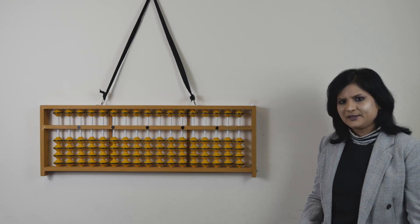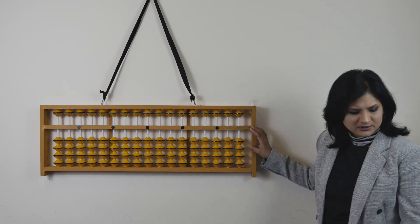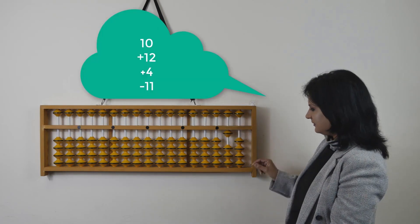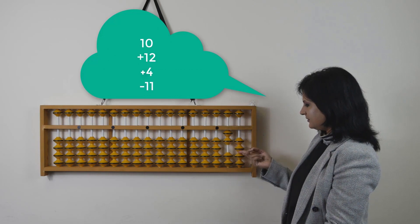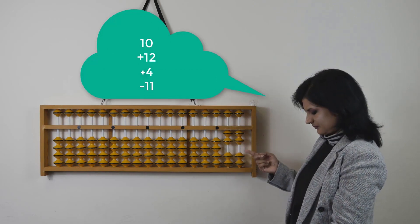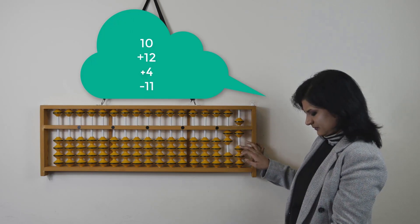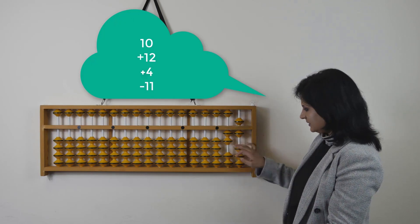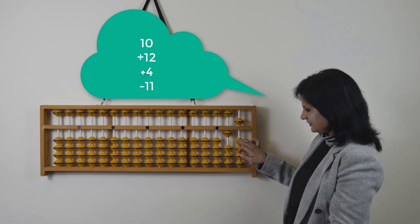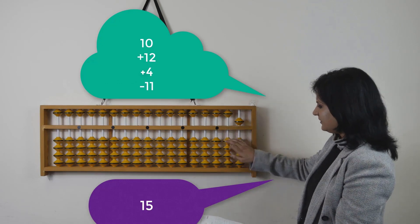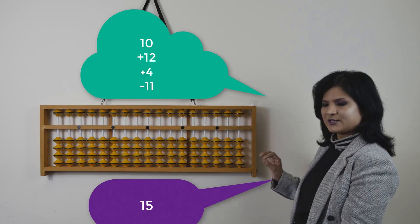Now I'm going to show you some sums on the abacus — how add 4 would work on the abacus. The first sum on the abacus would be: 10, add 12, add 4, take away 11. What's the answer? 15. Okay, let's do it in simple form first of all.